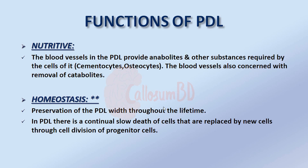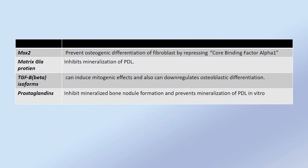The periodontal ligament is not a hard mineralized structure. Several molecules prevent its mineralization throughout lifetime. MSX2 protein prevents osteogenic differentiation of fibroblasts by repressing core binding factor alpha-1. Matrix GLA protein directly inhibits mineralization in the periodontal ligament.